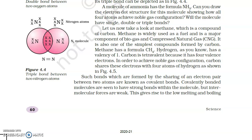So far we have discussed about how a covalent bond is formed between different atoms like nitrogen, oxygen molecule, hydrogen molecule, and the simplest compound of carbon, that is methane. Such bonds formed by the sharing of an electron pair between two atoms are known as covalent bonds. Covalently bonded molecules have strong bonds within the molecule, but intermolecular forces are weak.